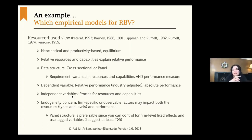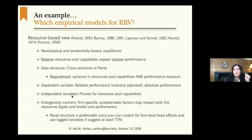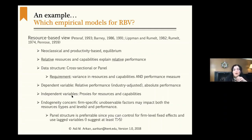The theory is about relative resources and relative performance, so you need at the very least cross-sectional data, and panel data is preferable because it lets you control for firm unobservables that might influence both resource types and levels and performance. For the dependent variable — relative performance — you can extract the industry mean or median, and you have to do both and show results for both to confirm robustness.